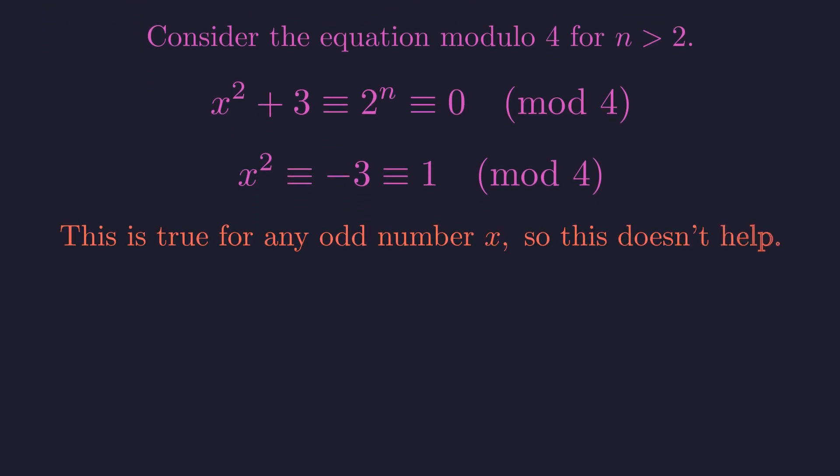But this doesn't lead to a contradiction. The square of any odd number is congruent to 1 modulo 4. Our condition that x is odd is just confirmed. We need a different modulus.